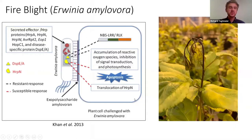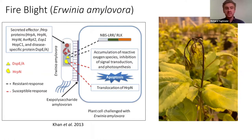I'd like to start with the background of my disease. I work on fire blight. It's caused by the pathogen Erwinia amylovora. It's a gram-negative necrotrophic bacteria that causes hundreds of millions of dollars of damage in the U.S. alone, and it's been a problem for hundreds of years.